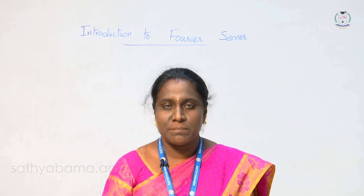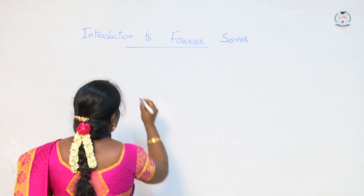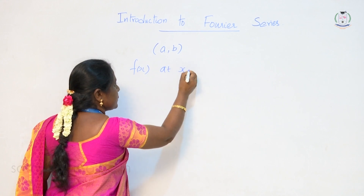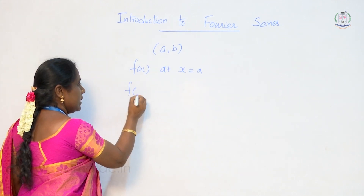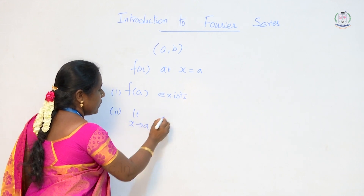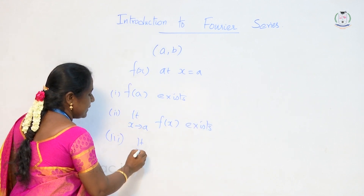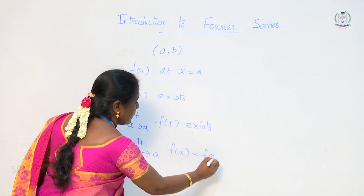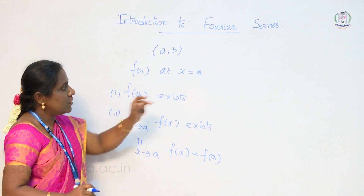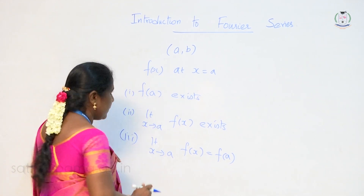To introduce Fourier series, we will see some basic concepts. Let f of x be a function defined in the open interval (a, b). f of x is said to be continuous at the point x = a if: f(a) exists, the limit as x approaches a of f(x) exists, and the limit as x approaches a of f(x) equals f(a). If these conditions are satisfied, we say the function f(x) is continuous at x = a. The function is continuous in the interval (a, b) if it is continuous at each and every point in the interval.